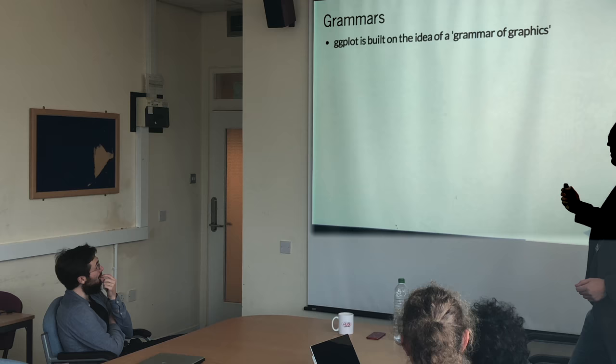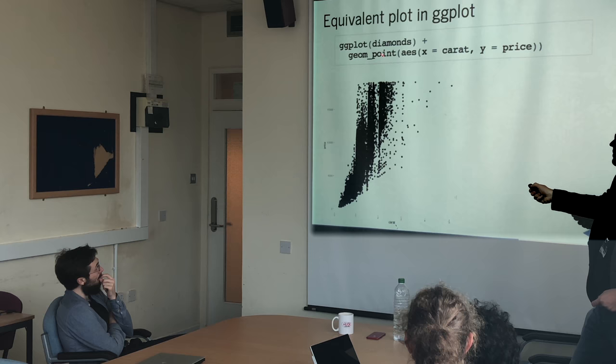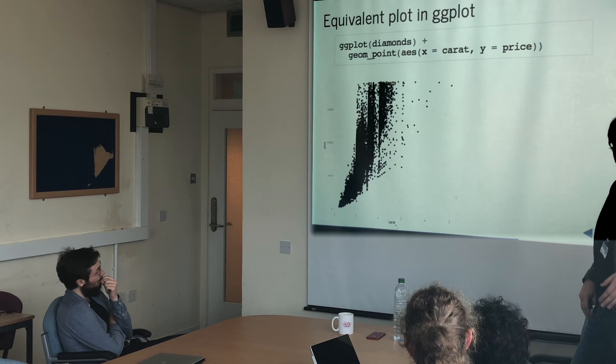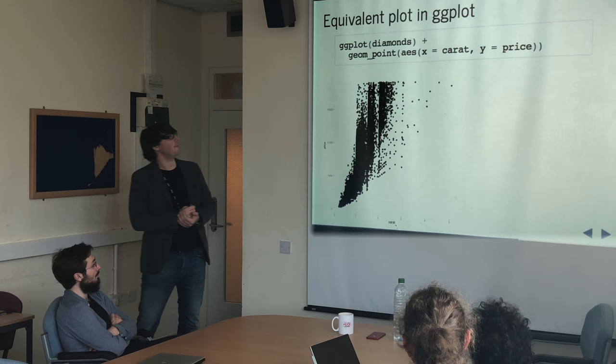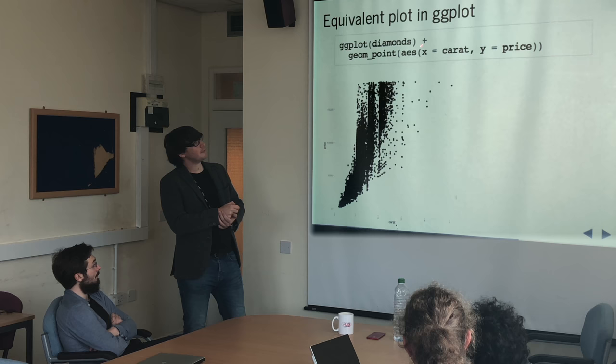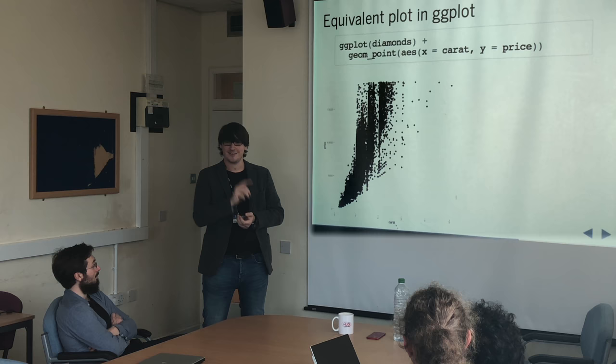We have our data which is diamonds, we have geoms, and there's an implicit Cartesian coordinate system. Annoyingly, because this was written before the pipe was invented, they used pluses instead of pipes — just to throw everything off. That's one of the reasons I wanted to bring this up. So if you see R code with loads of pipes and then suddenly there are pluses, or you get a weird error when you start using ggplot, check you're not trying to pipe that into ggplot, because that won't work.